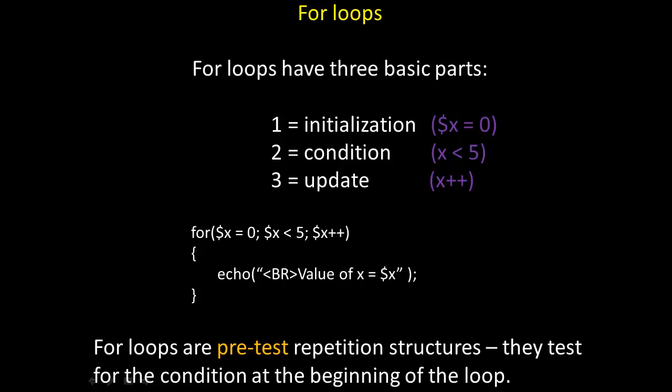Some other people call this an off-by-one error. Remember, for loops are pre-test repetition structures. They test for the condition at the beginning of the loop before they iterate, and if the condition is false, then they won't repeat or execute the code within their curly braces at all.